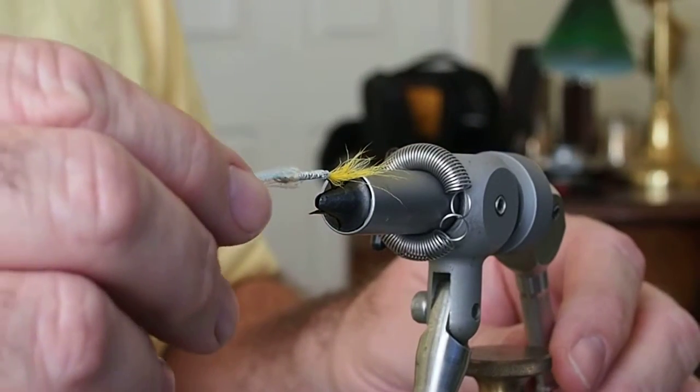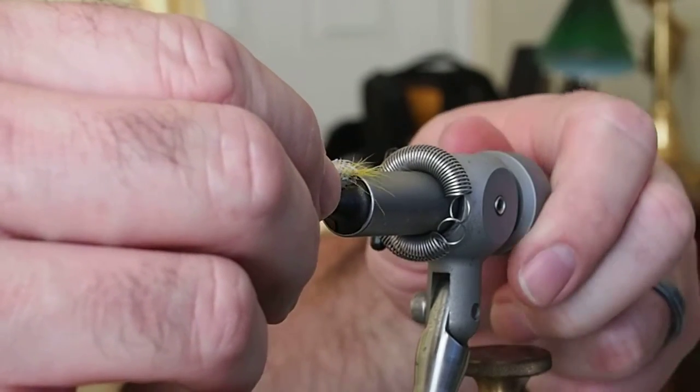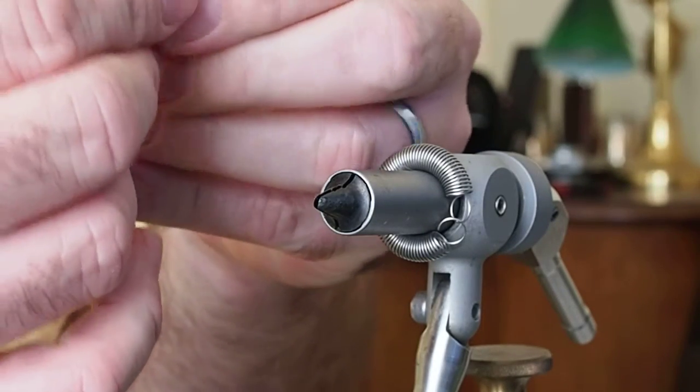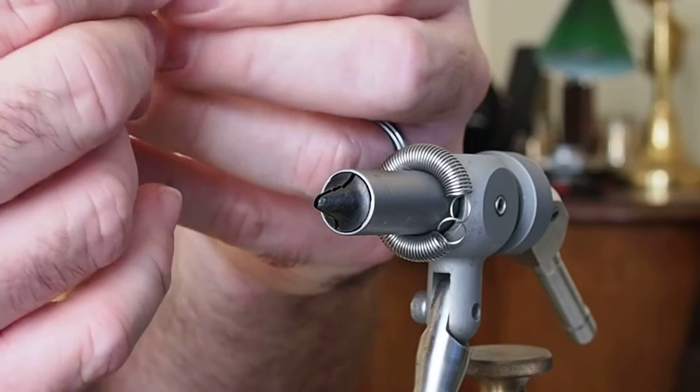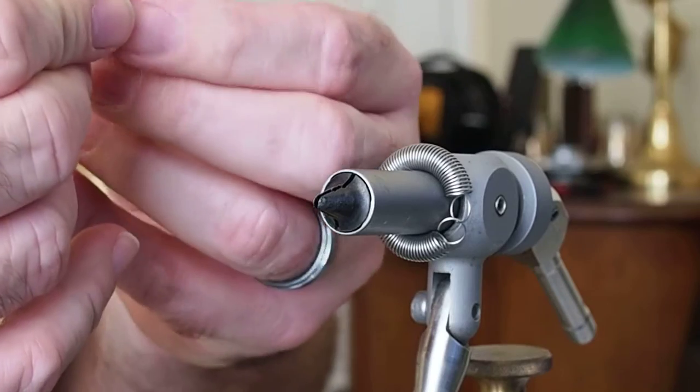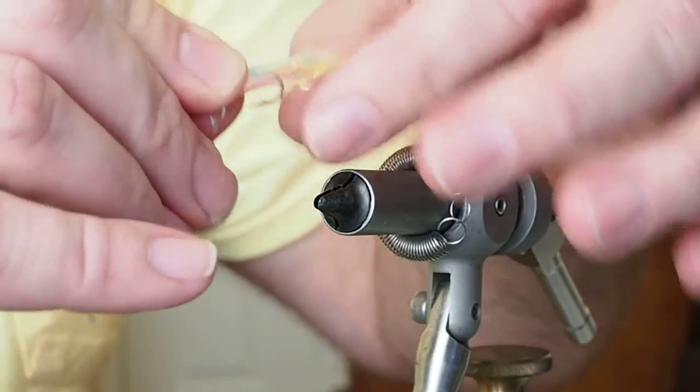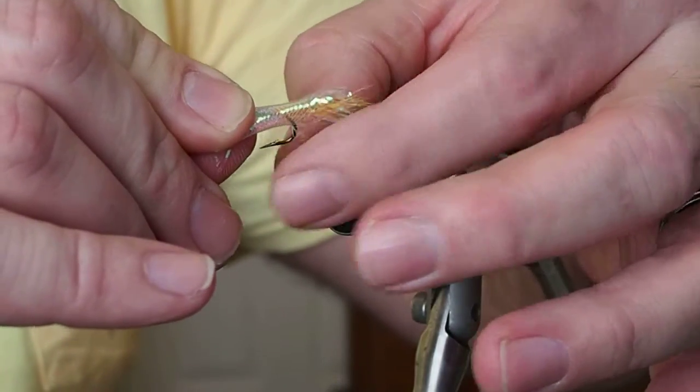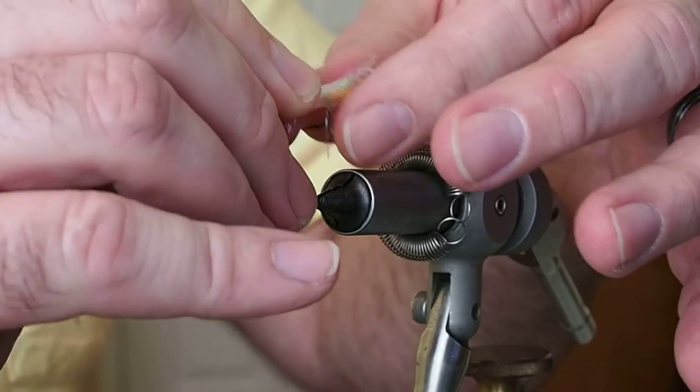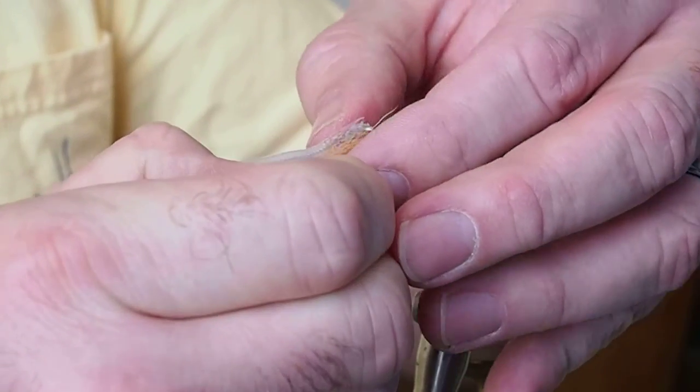And now we just want to slip that over the body of the fly. Pull the fibers around. There we are. We may just have to move those fibers around the hook bend. And then we'll go ahead and put the hook back in our vise.